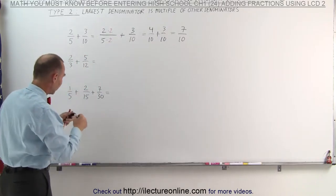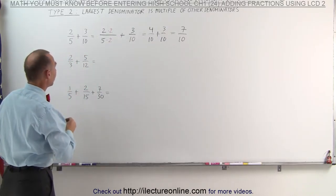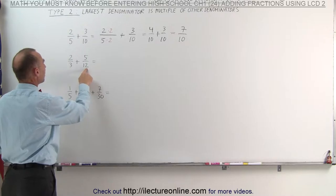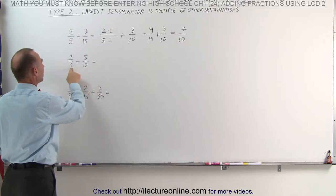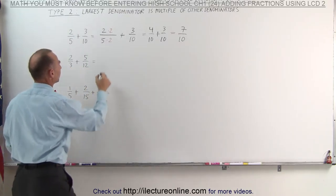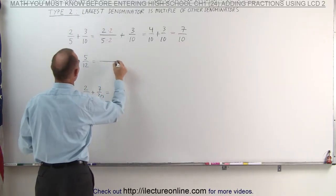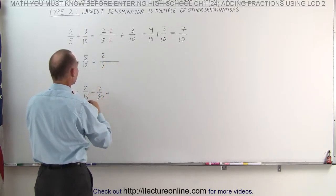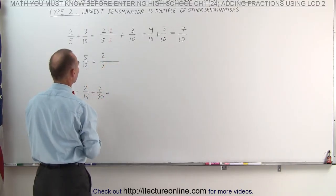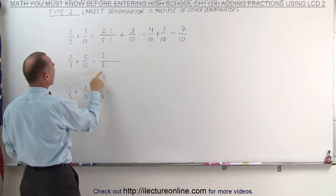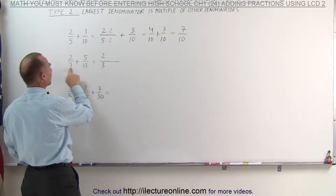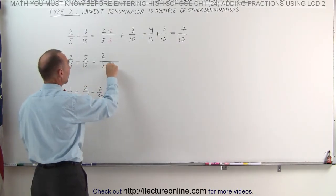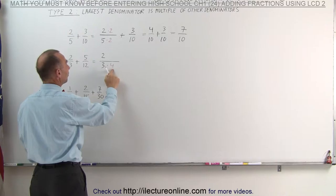Let's do the second exercise. Again, notice that the largest denominator is a multiple of the smaller denominator, which means we can write the smaller denominator in such a way that the denominators become the same. The question is, what do I need to multiply 3 by to get 12? The answer is multiply by 4, since 3 times 4 is 12.